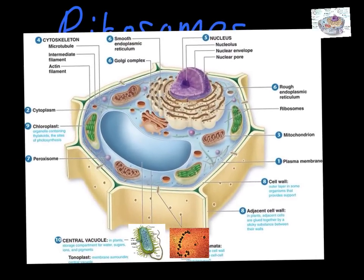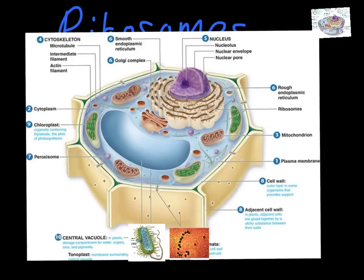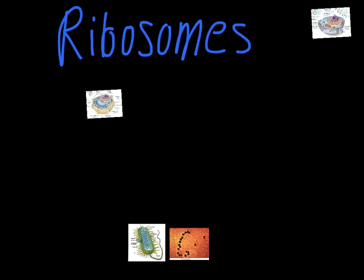We'll take a look at the plant cell. We see we have the same deal with this one. We find the little ribosomes all over the endoplasmic reticulum and also free-floating out in the cell. They have exactly the same function, whether in plant or animal cells — they're still building proteins.